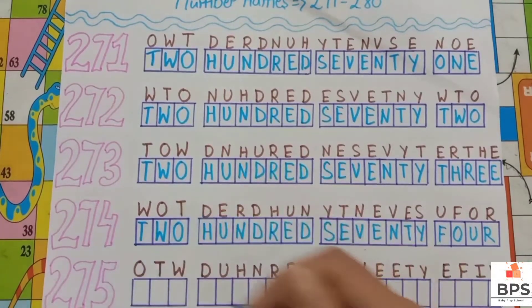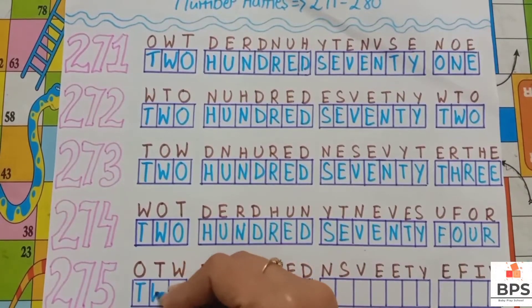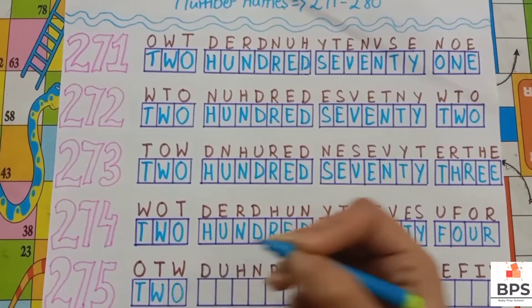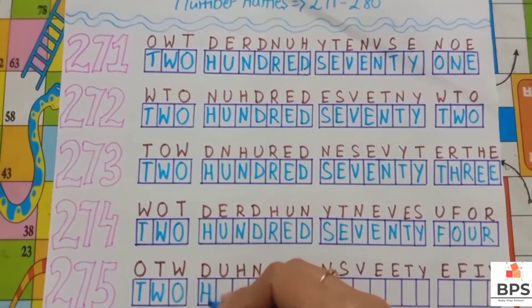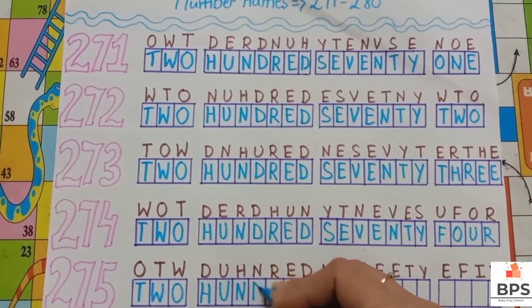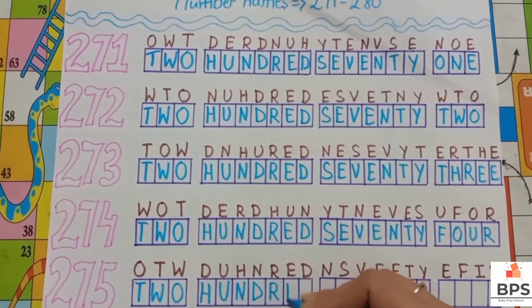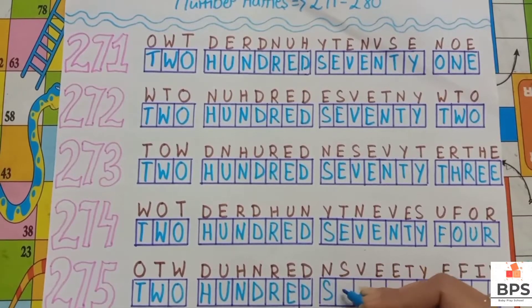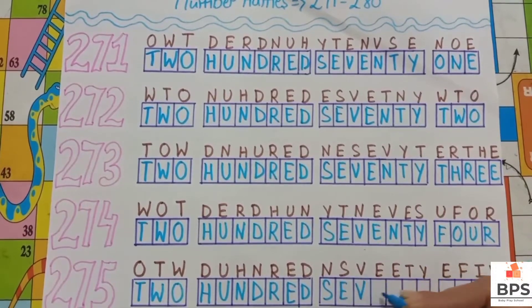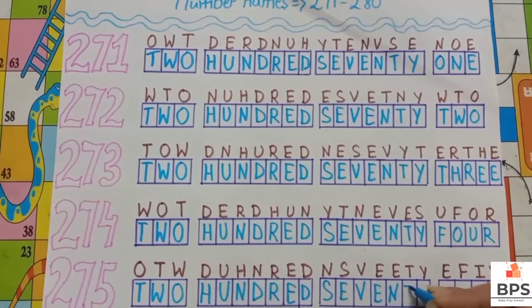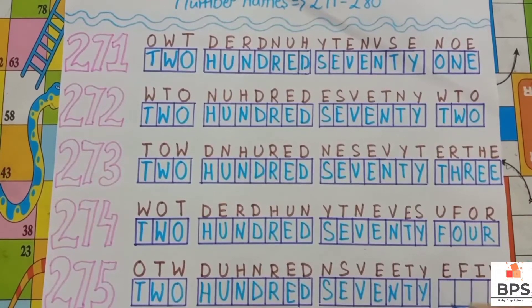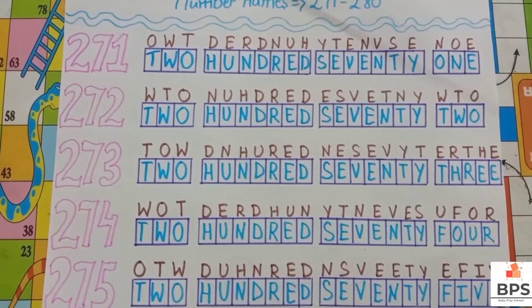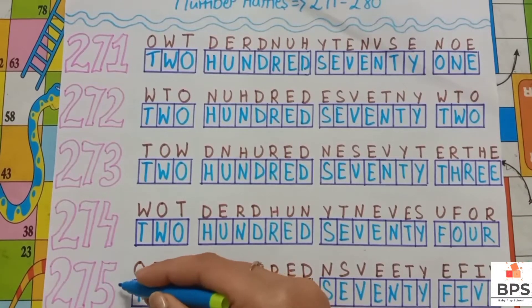275: T, W, O, 2, H, U, N, D, R, E, D, 100, S, E, V, E, N, T, Y, 70, F, I, V, E, 5. 275.